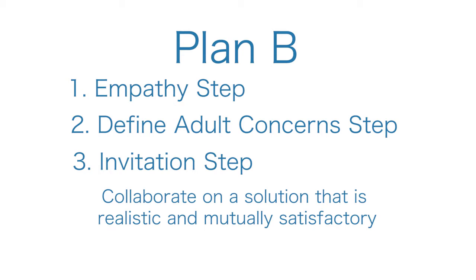If a kid is having difficulty getting to school on time and therefore he's failing his first period class and getting detentions because he's late, that's an unnatural consequence. That's not going to help us figure out what's getting in the way of the kid getting to school on time, and it's not going to solve that problem. Plan B is going to solve that problem.